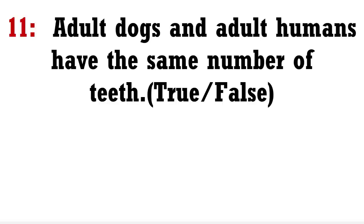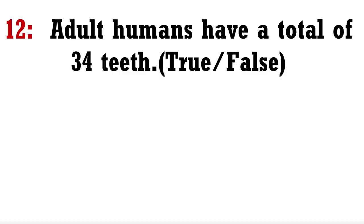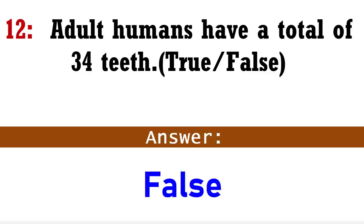Adult dogs and adult humans have same number of teeth, true or false? Answer: False. Adult humans have a total of 34 teeth, true or false? Answer: False.